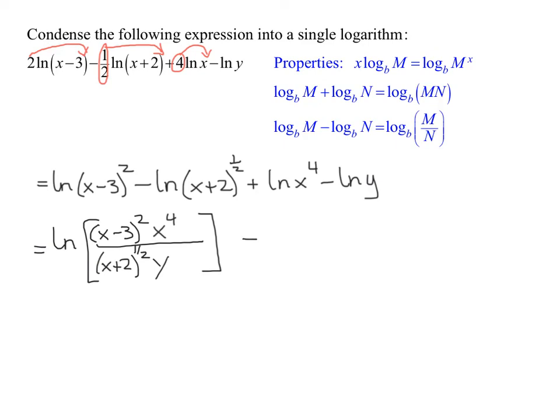The only thing left is to tidy it up. This becomes the natural log—normally we'd write x to the fourth before x minus three squared, but you don't have to since multiplication is commutative. I'll write y first in the denominator, because I have to turn the one half power into a radical: the square root of x plus two.